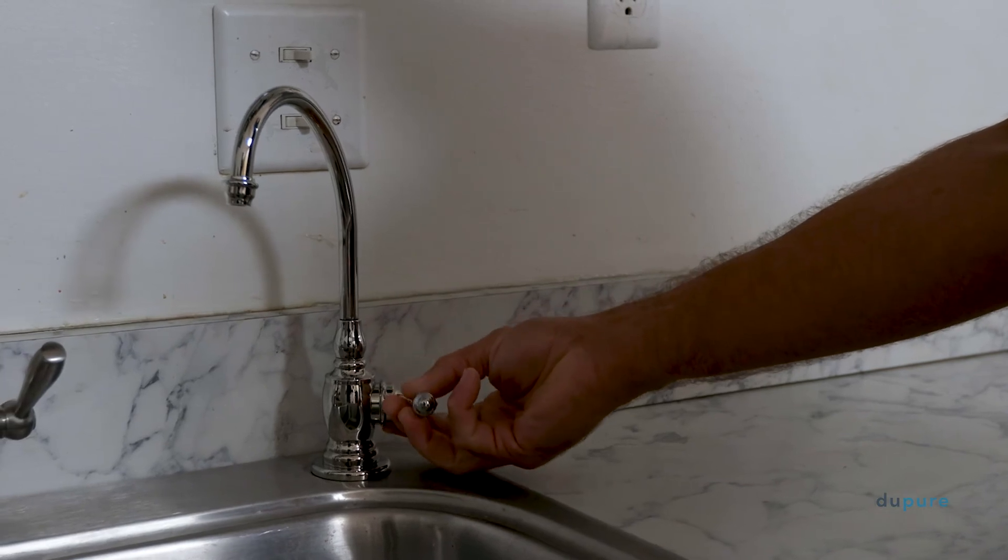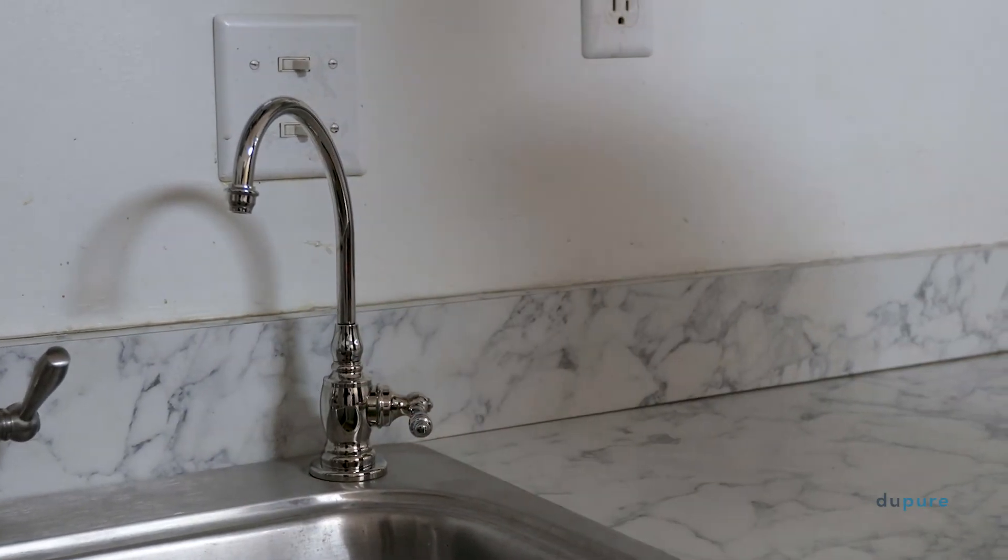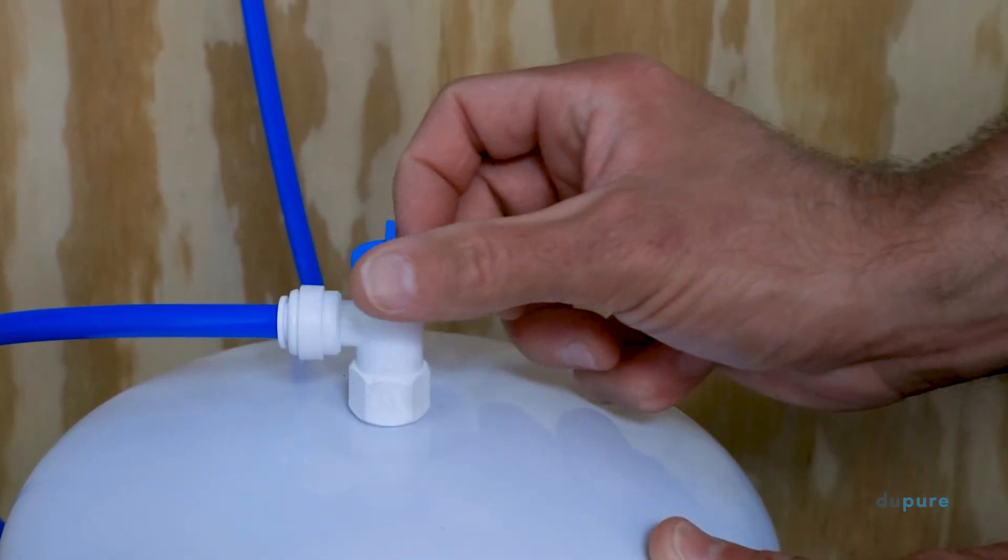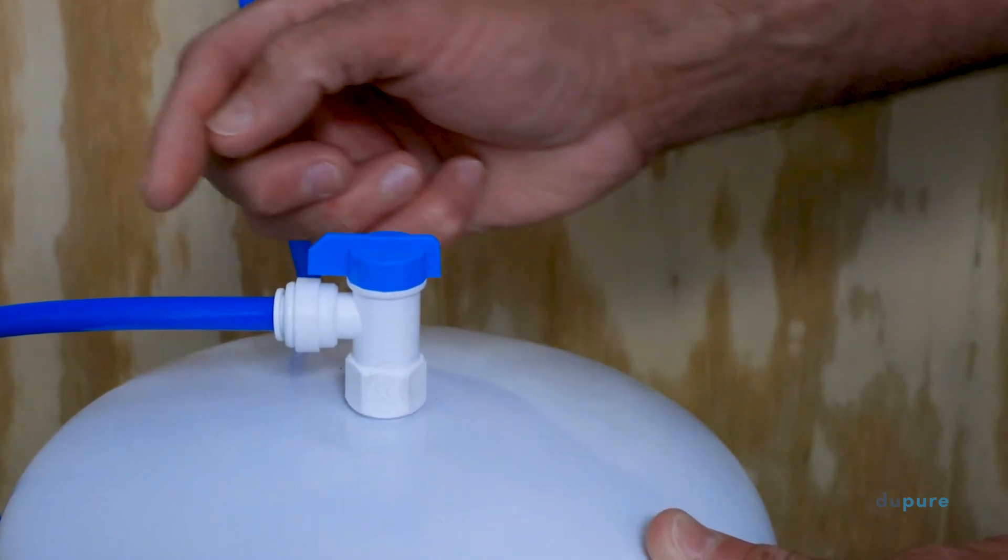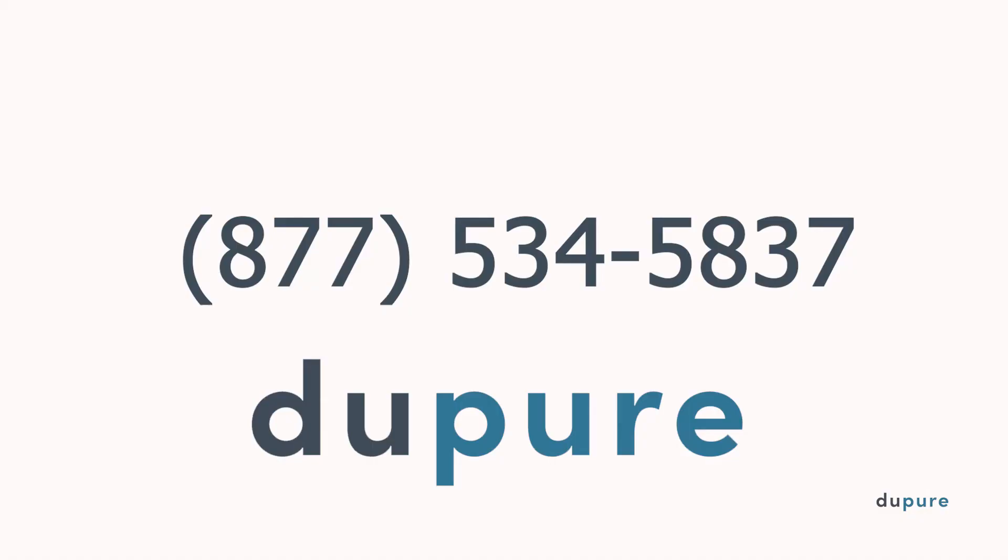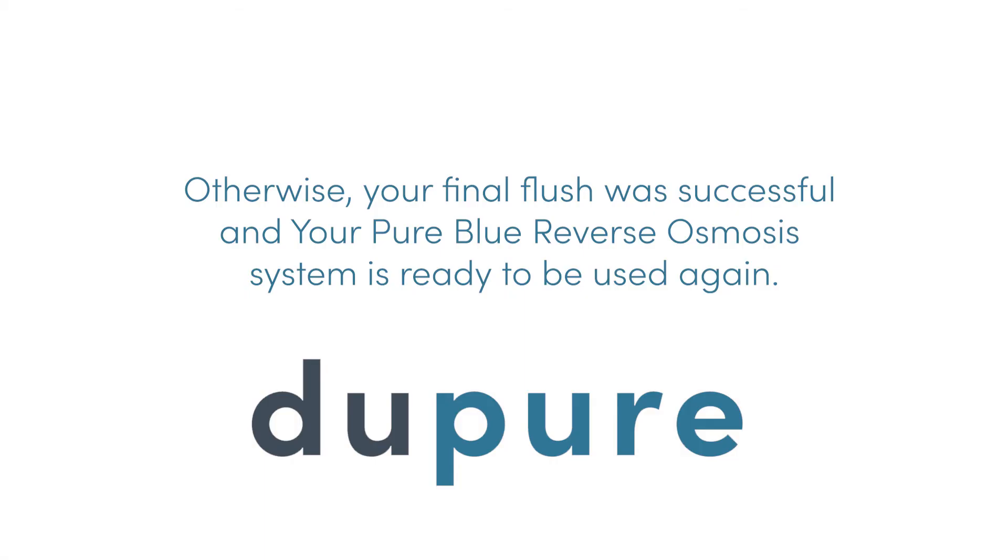After 10 minutes, close the spigot and open the tank. Make sure to check your cabinet for any excess moisture. If you see anything concerning, simply turn the valve off and give DuPure a call at 877-534-5837. Otherwise, your final flush was successful and your Pure Blue Reverse Osmosis System is ready to be used again.